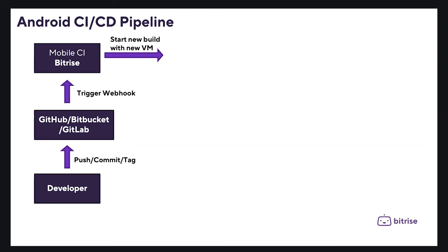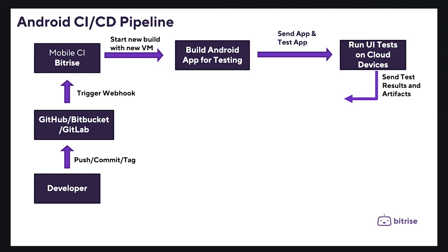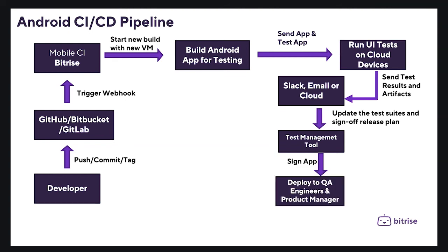The workflow can be started by a developer commit or by creating a new release tag. This will trigger a webhook on the Bitrise CI platform, then Bitrise will initialize a new virtual machine to start building the Android application for testing. We can then send the app and the test APK to a cloud testing service such as Firebase Test Lab to execute our tests, send the test results and artifacts to different channels, and integrate our CI with a test management tool to update our test suite and sign off the release plan.